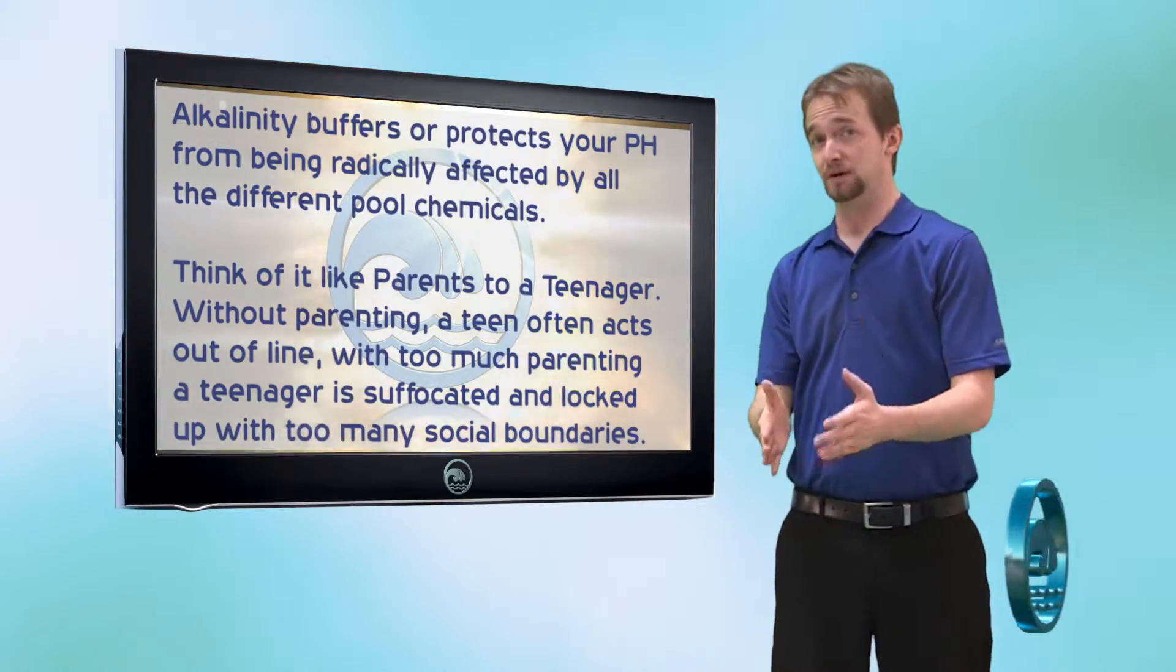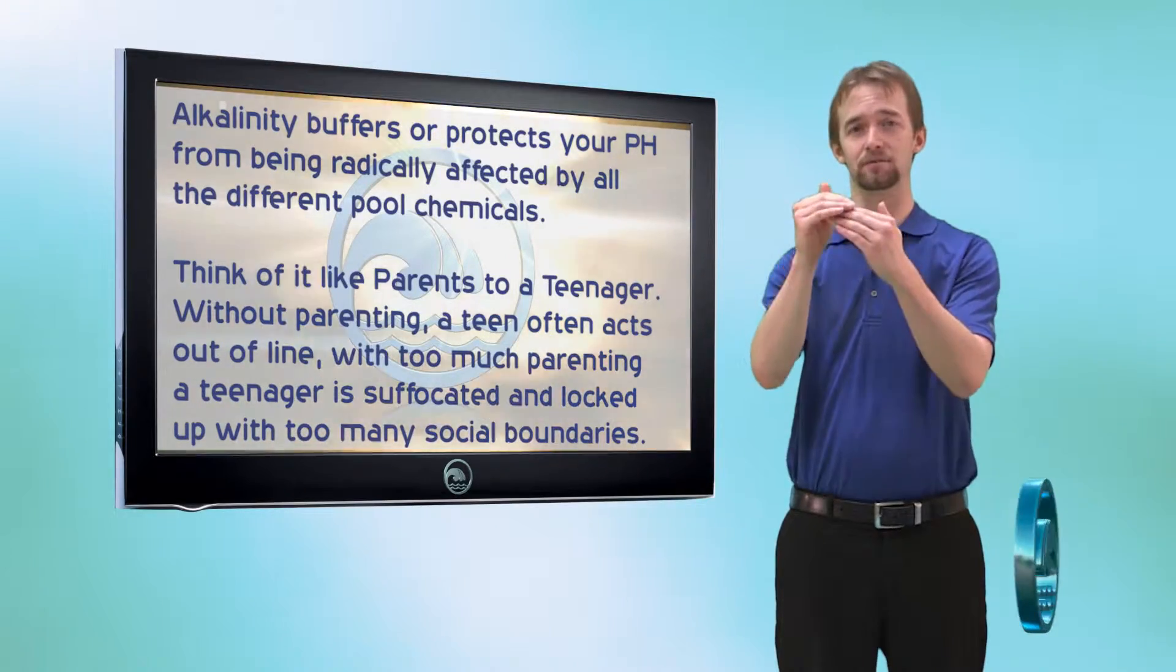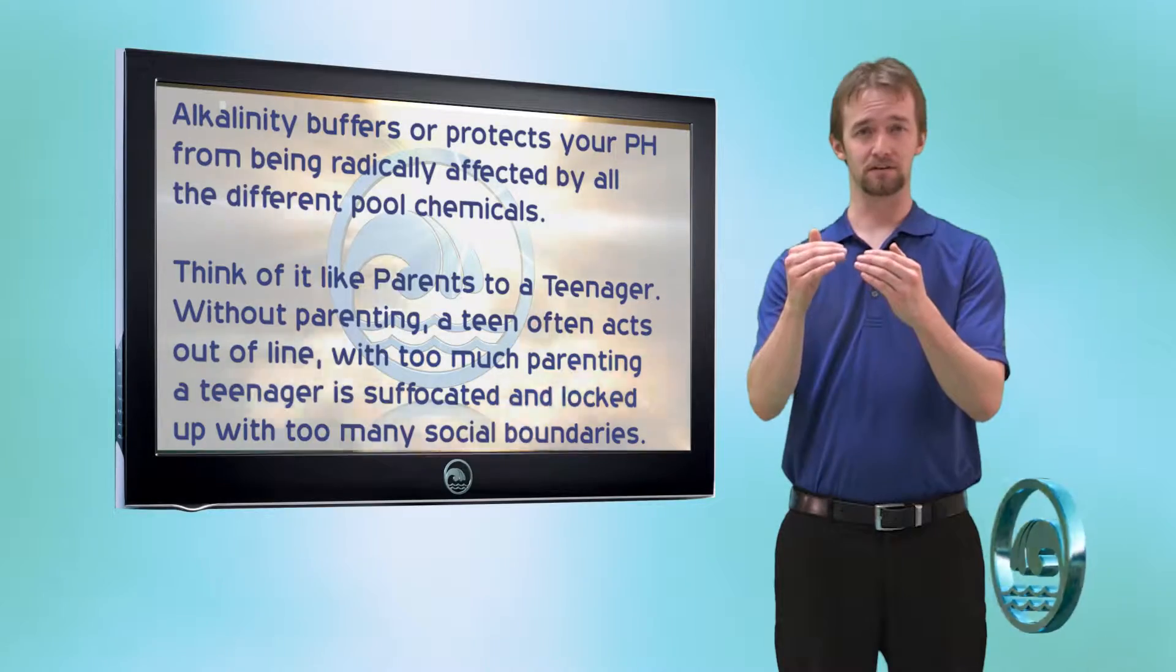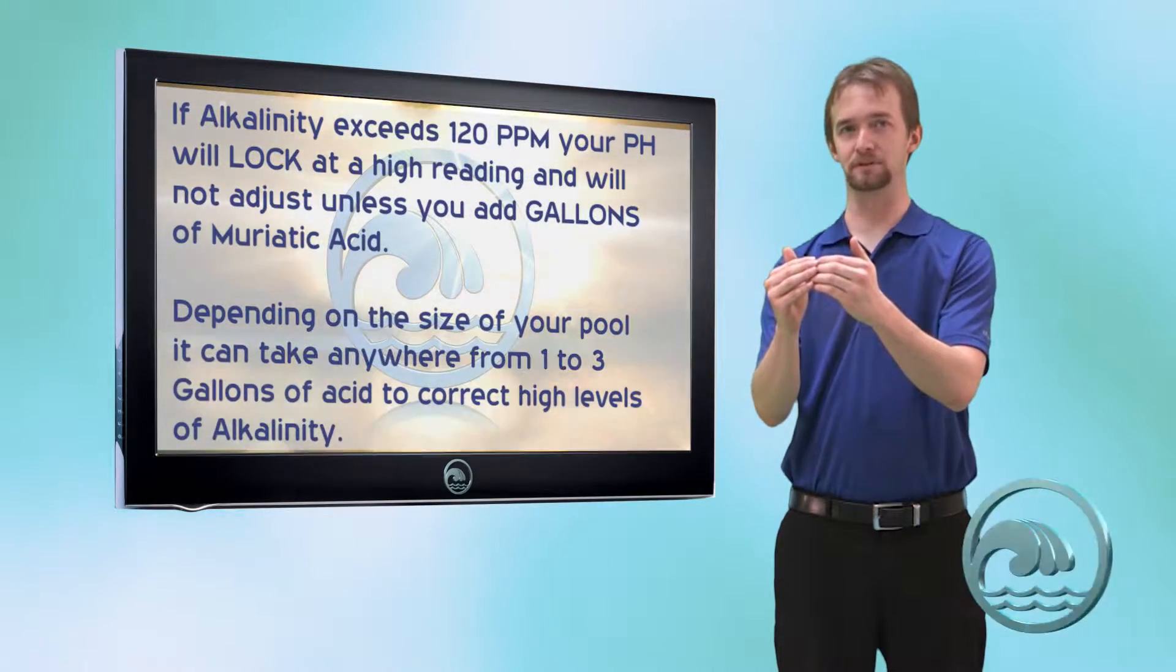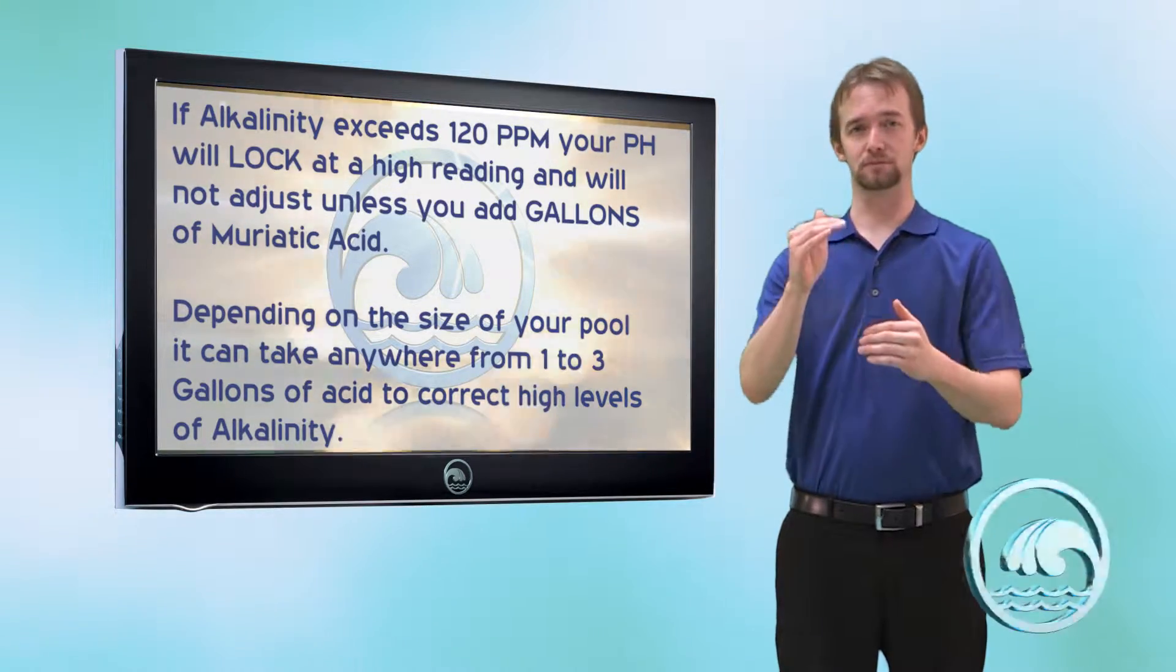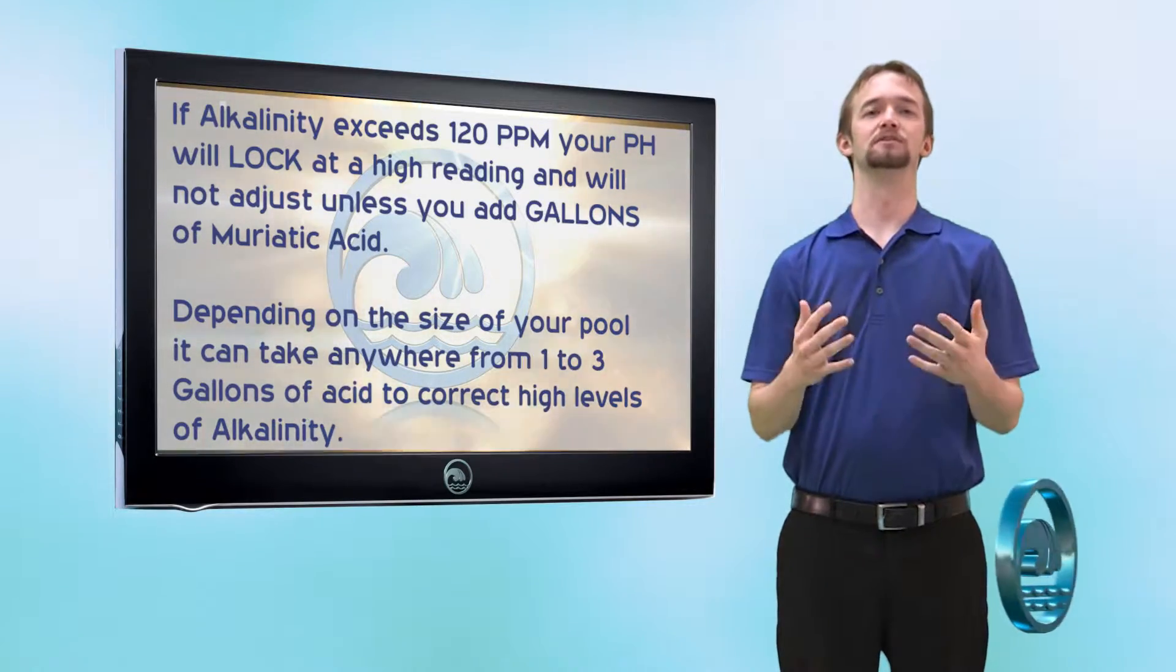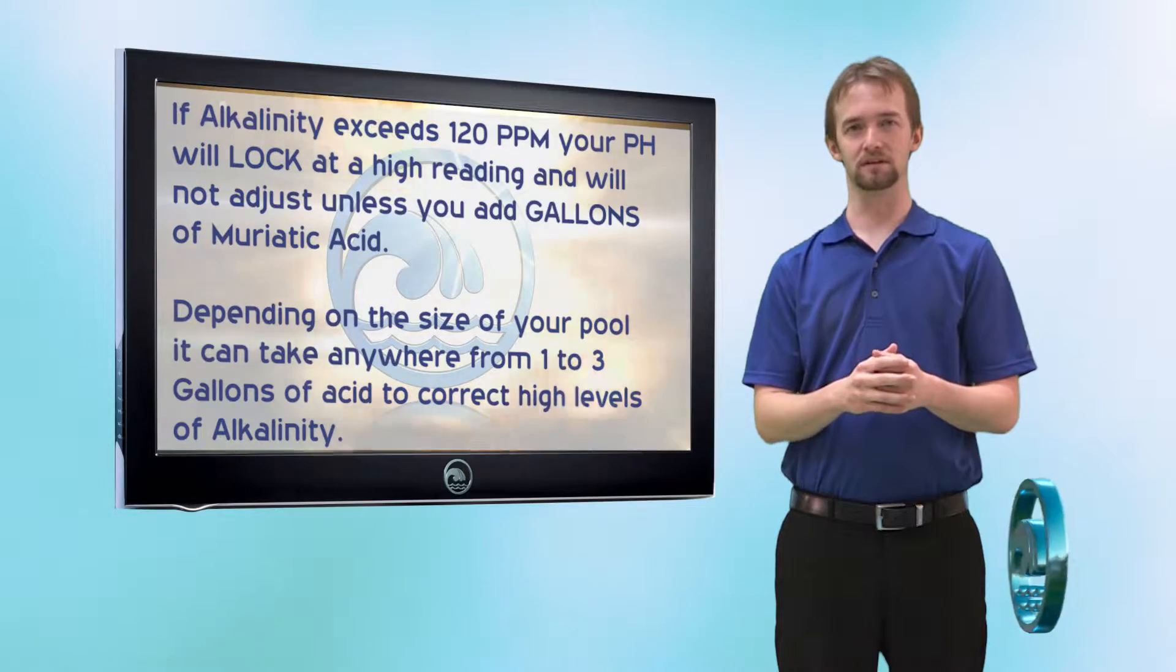If you get too much alkalinity, the opposite happens. Your pH locks, but it locks up at a high level because alkalinity is a base. So if you get too much alkalinity, if you add too much sodium bicarbonate and it goes above 120 parts per million, your pH goes into what's called pH lock, where it goes up to about 8.5 to 9 and it won't move. It requires enormous amounts of muriatic acid to burn out higher levels of alkalinity.